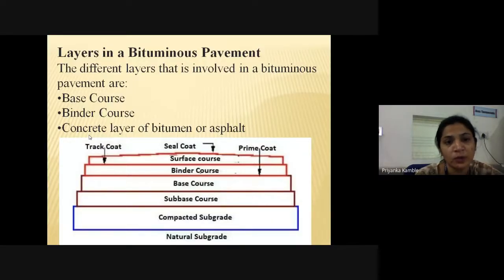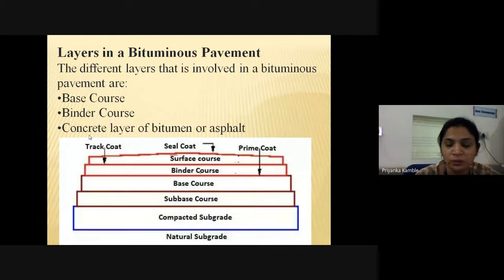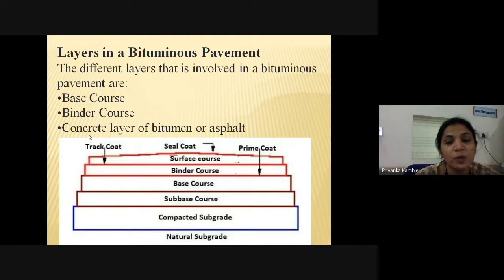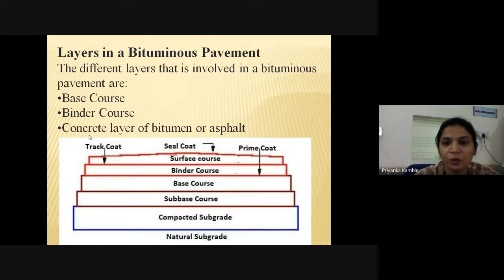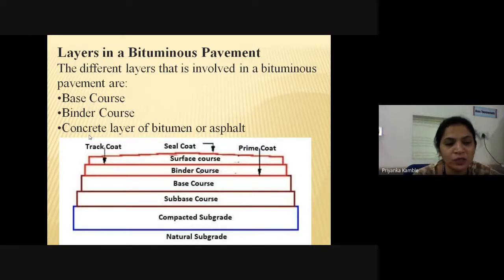The layers in a bituminous pavement from bottom are: natural subgrade, compacted subgrade, sub-base course, base course, binder course, surface course, and then the tack coat. The tack coat acts like a sandwich between the surface course and binder course; the prime coat is sandwiched between the binder course and base course; and the seal coat is the last application on the surface course.